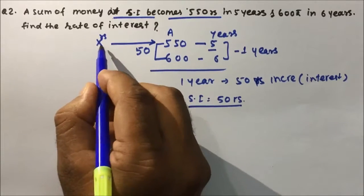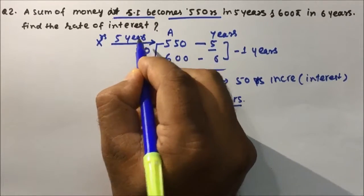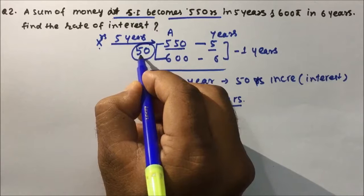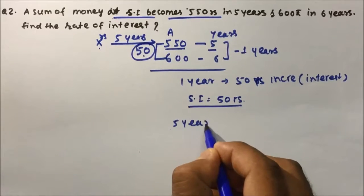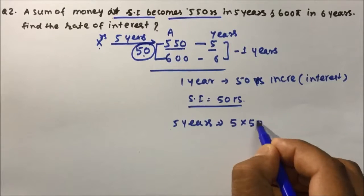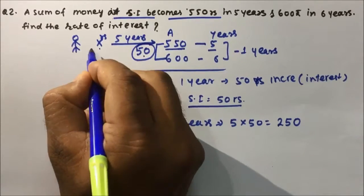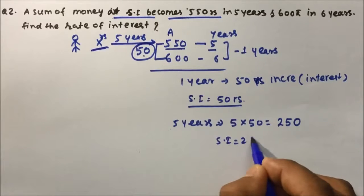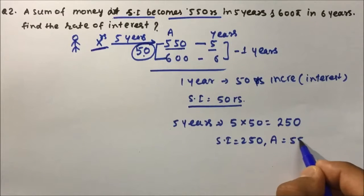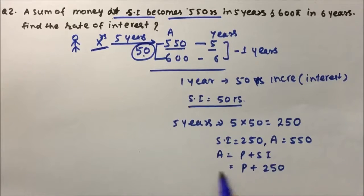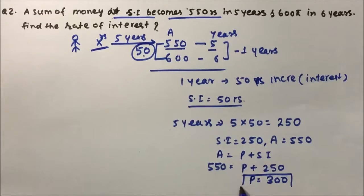Now how to get the principal. In 5 years, the amount is becoming 550. In 1 year the interest is 50 rupees, so in 5 years the interest will be 5 × 50 = 250 rupees. So 250 rupees is the simple interest and the amount after 5 years is 550. Therefore, principal = amount − simple interest = 550 − 250 = 300 rupees.